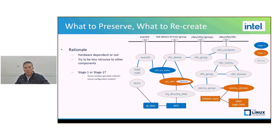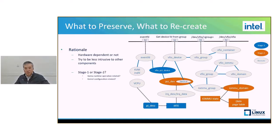Second, we don't want the resulting state-saving code to be too intrusive to other kernel components. Pass-through devices are managed by the VFIO driver, so it is reasonable to put major device keep-alive management logic in the VFIO layer so as not to touch other components too much. Third, if we need to save a state, which stage does it belong to — is it manipulated by QEMU runtime operations, or will it only be destroyed by kernel reboot? For example, the VFIO PCI device data structure has hardware-dependent states. The underlying PCI device will be disabled when QEMU quits and enabled by QEMU on restart, so it belongs to stage one. In later slides, we will look into these keep-alive states in more detail.